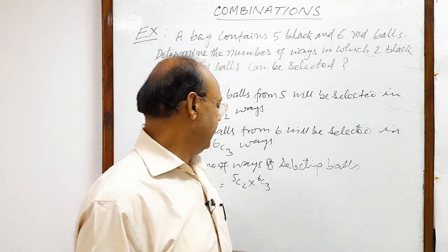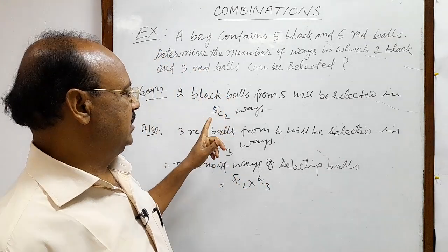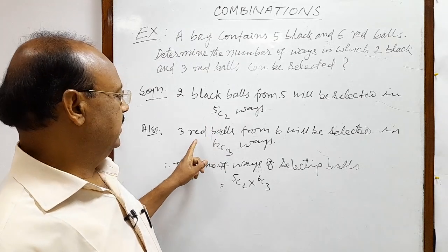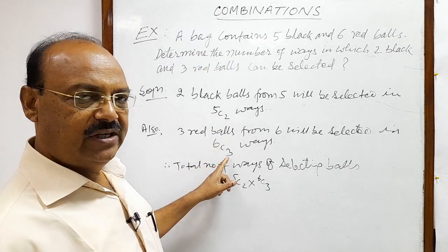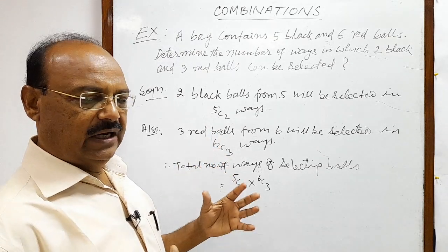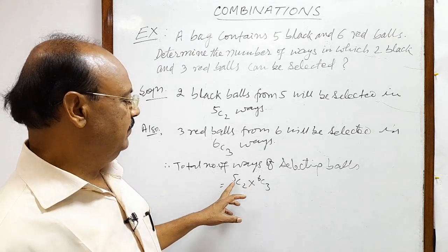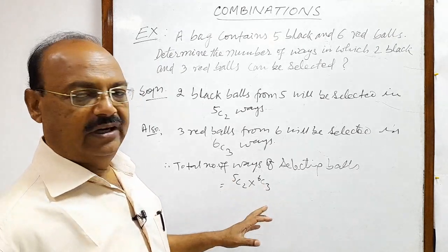So similarly, in this case also black balls can be selected in 5C2 ways and red balls can be selected in 6C3 ways. So both colors of balls can be selected in 5C2 into 6C3 ways.